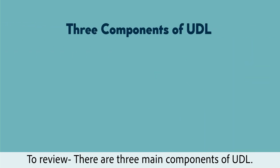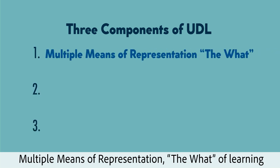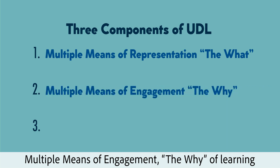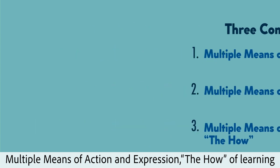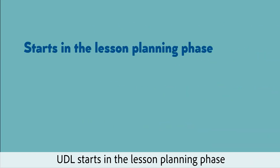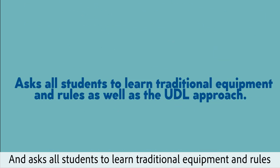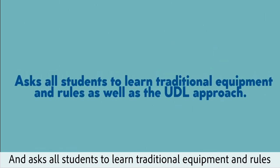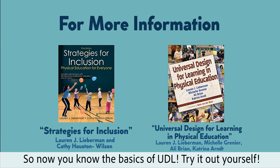To review, there are three main components of UDL: multiple means of representation — the what of learning; multiple means of engagement — the why of learning; and multiple means of action and expression — the how of learning. UDL starts in the lesson planning phase, has high expectations for all students, and asks all students to learn traditional equipment and rules as well as the UDL approach. So now you know the basics of UDL — try it out yourself!